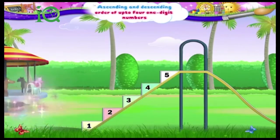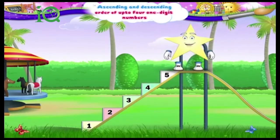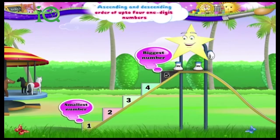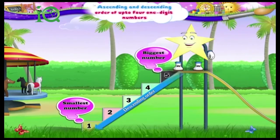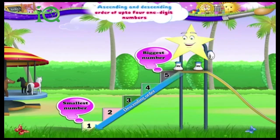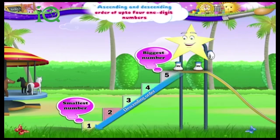And when we go from the biggest number to the smallest number, we say the numbers are arranged in descending order. 5, 4, 3, 2, 1 — descending order. Down the slide!